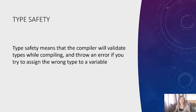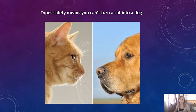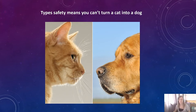So, type safety — what is it? Type safety means that a compiler will validate types while compiling and throw an error if you try to assign the wrong type to a variable. Basically, you can't turn a cat into a dog. So, if you've got some text, you can't just turn it into a number like you can with other languages such as Python. With type safety, if you say it's going to be a string, that is what it is unless you do specific functions, transformations, or parsing to actually turn that into a number.